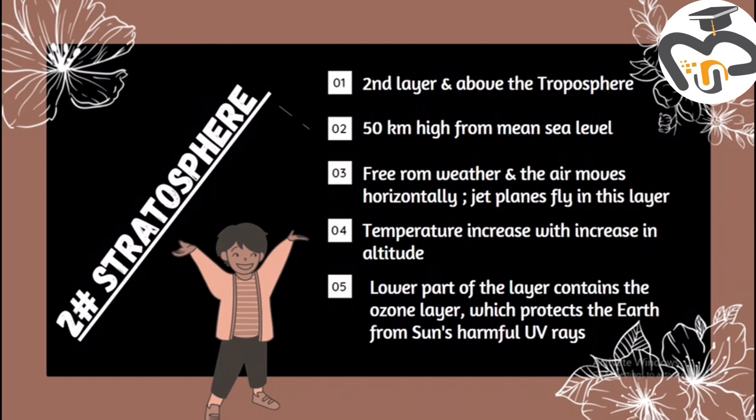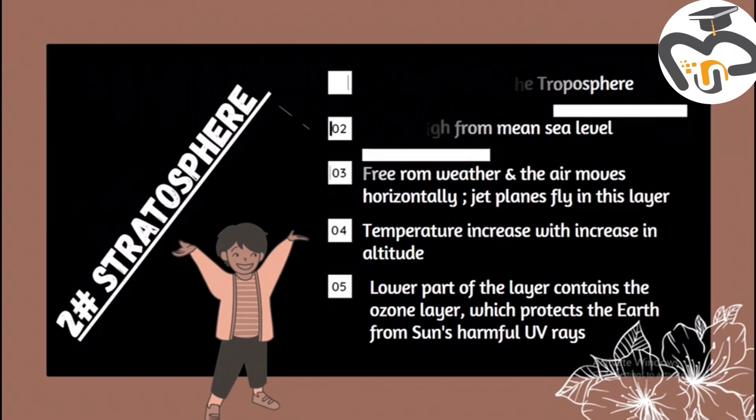The lowest part of the stratosphere contains the ozone layer, which protects the Earth from the Sun's harmful UV rays. As we all know, the Sun has harmful rays called UV rays, and in the stratosphere there is a combination of ozone molecules which forms the ozone layer, protecting the Earth from those harmful UV rays.